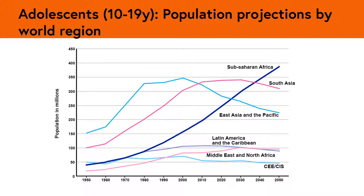The trends in population in different regions of the world differ substantially. As one can see here, it's projected that there will be a substantial decline in the number of adolescents in the East Asia and Pacific region over the next 35 years. In contrast, the numbers in Sub-Saharan Africa, where adolescents already make up 23% of the total population, will continue to increase substantially through to 2050 and beyond.